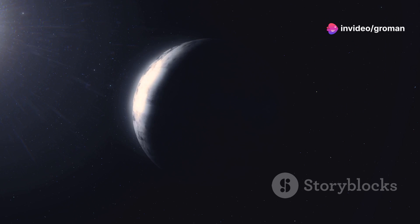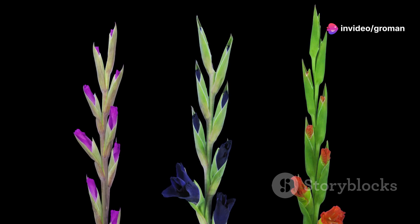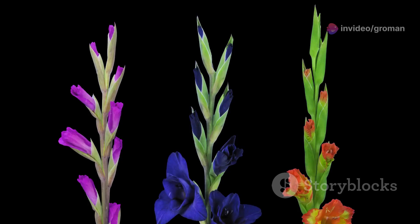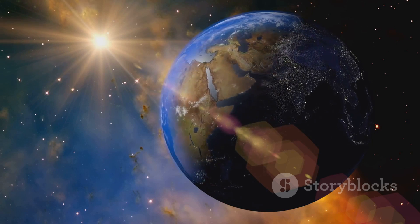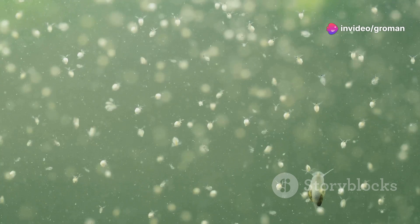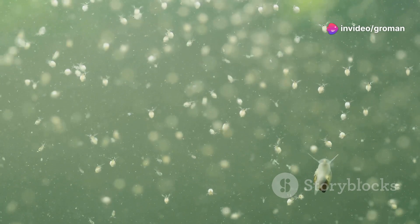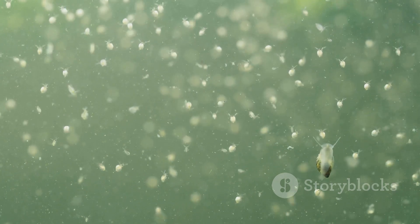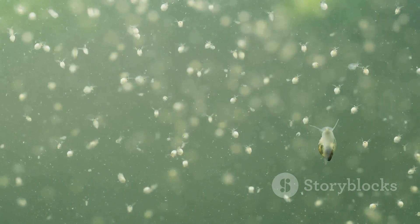Lastly, a planet needs time. Life doesn't just pop into existence overnight, it evolves. Our Earth has been around for over four and a half billion years, and life took its sweet time to develop. From the first single-celled organisms to the complex plants and animals we see today, life on Earth has been shaped by billions of years of evolution, a slow and gradual process of adaptation and change.